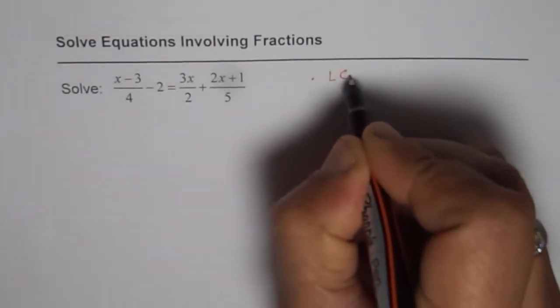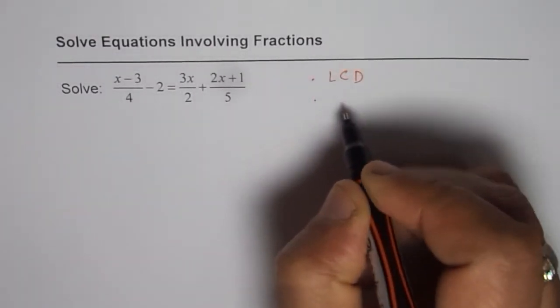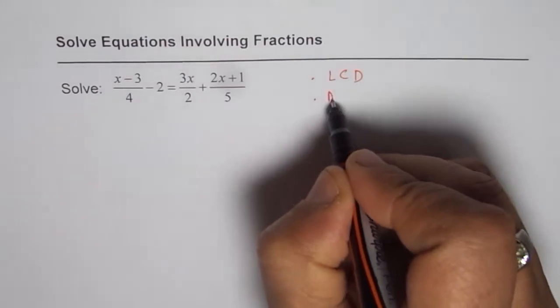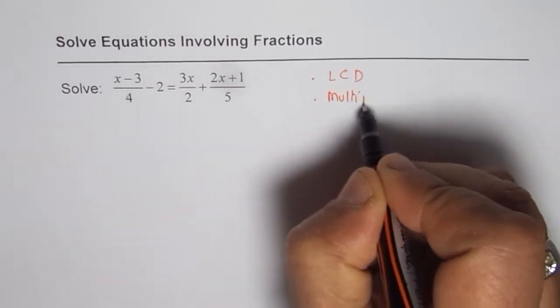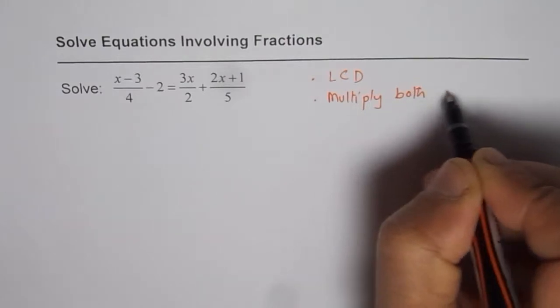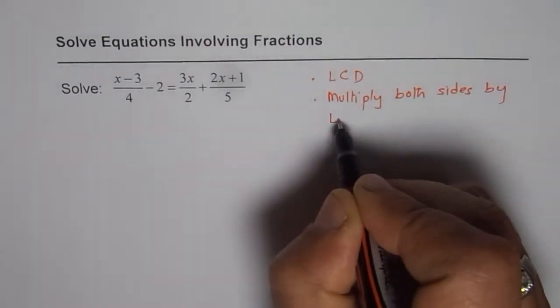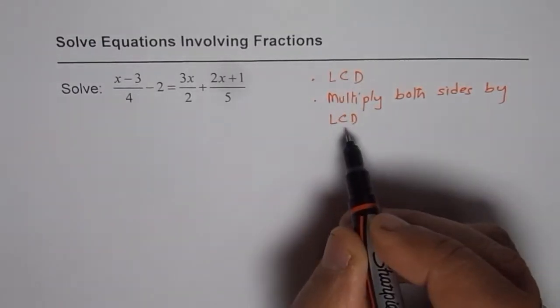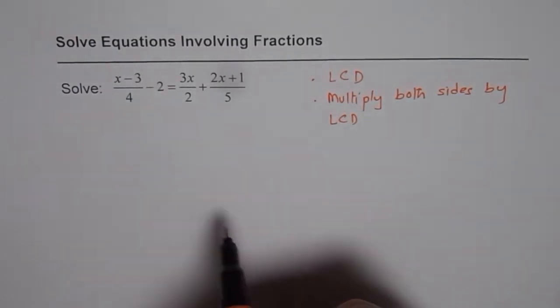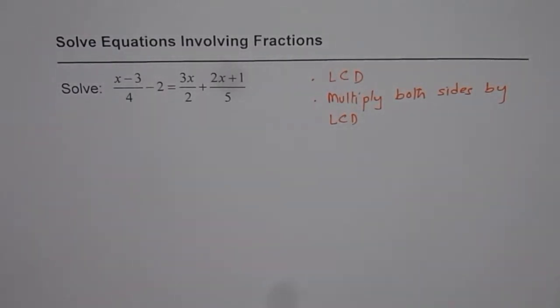to find the lowest common denominator, and then second, multiply both sides by the lowest common denominator. In doing so we will get rid of fractions and then we will have a linear equation without fractions to solve. It will be easier for us.